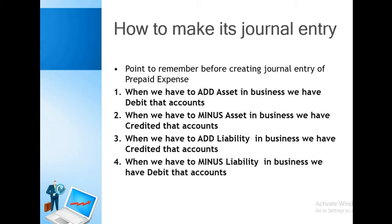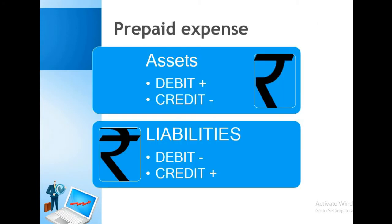Here is a chart summarizing the rules: for assets, debit means adding and credit means deducting. For liabilities, debit means deducting and credit means adding. These are the rules followed for prepaid expenses. It is important to note that prepaid expenses are assets, not liabilities.